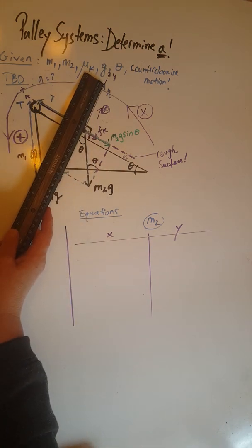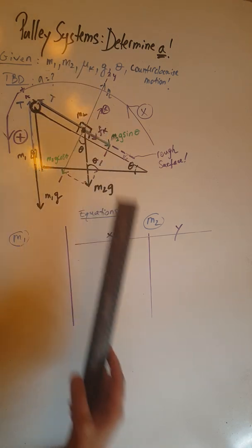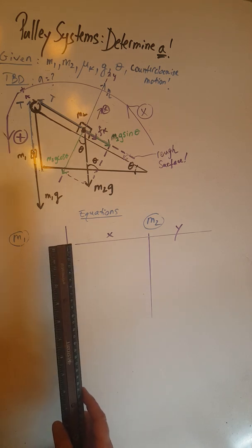So let's start by checking those two forces. The normal here is 7.8 centimeters and m2g cosine theta is also 7.8 centimeters, so that's good.